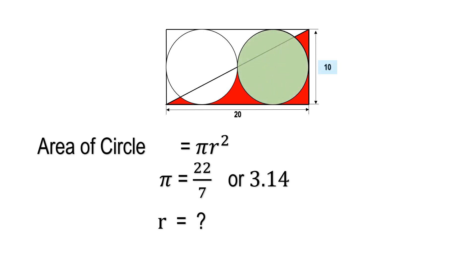In the diagram we have two circles, right, which are of the same size. If you take the breadth of the rectangle, its value is 10. It is same as the diameter for the circle.